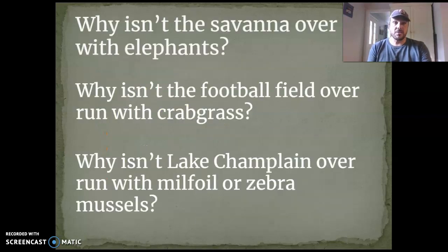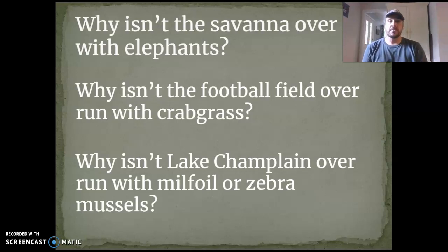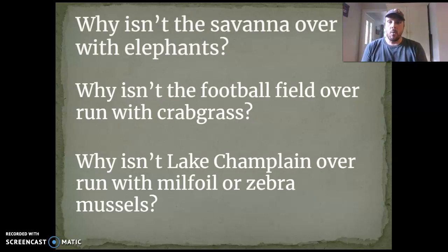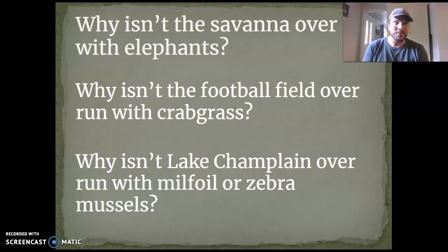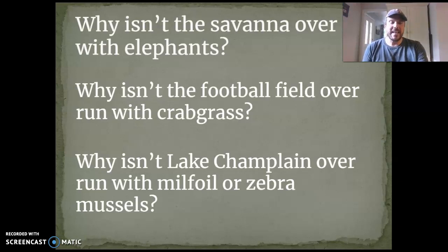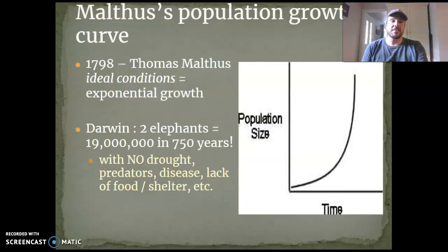So if we think about some different ecosystems, we might ask ourselves: why isn't the savannah overrun with elephants or zebra? Why isn't our football field at CHS overrun with crabgrass or daisies? Why isn't Lake Champlain overrun with milfoil, zebra mussels, lake trout, or bass? Everything's kind of in a balance, right? How does nature maintain that balance? Well, the way it maintains it is through this idea of limiting factors. But before we talk about those, we should probably talk about how growth occurs in populations.